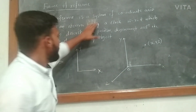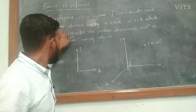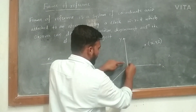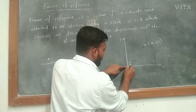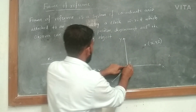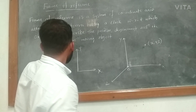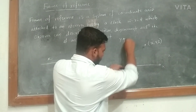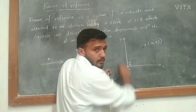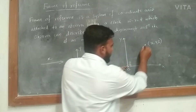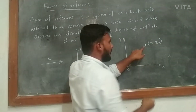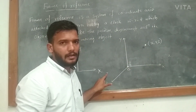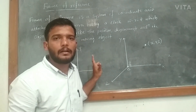So, the frame of reference is a system of coordinate axes attached to an observer. The coordinate axes are attached to this observer. Having a clock with respect to it, the observer can describe position, displacement, and acceleration. With respect to this clock and three coordinate axes, it describes the position and acceleration of the particle. You draw your frame here — this is the frame of reference.